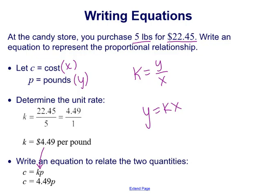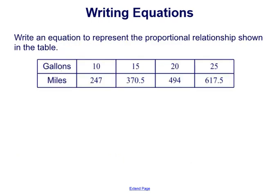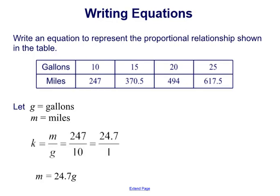Now we can also write equations using a table. Here's an example. We have gallons and miles. Write an equation to represent the proportional relationship shown in the table. First we need to find the unit rate, and then we need to write the equation. Let's define the variable g for gallons and m for miles, where g is like x and m is acting like y. Those values.